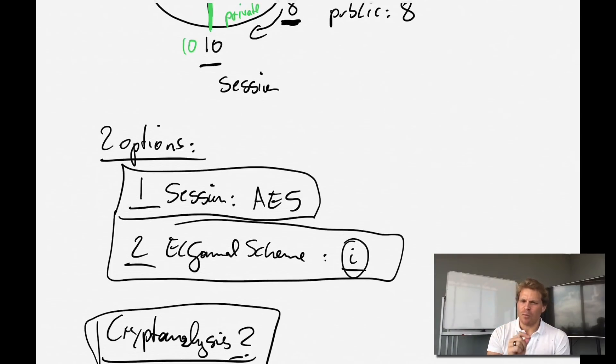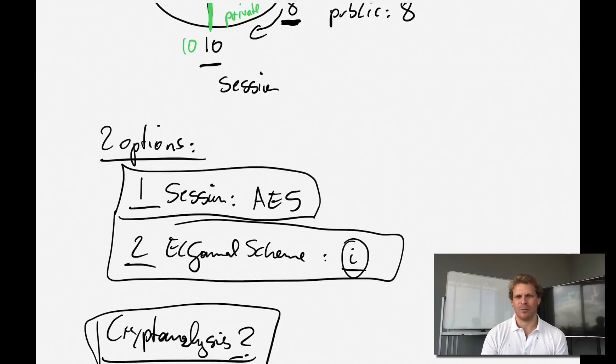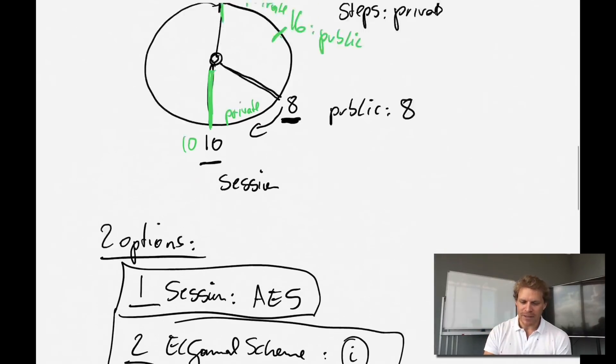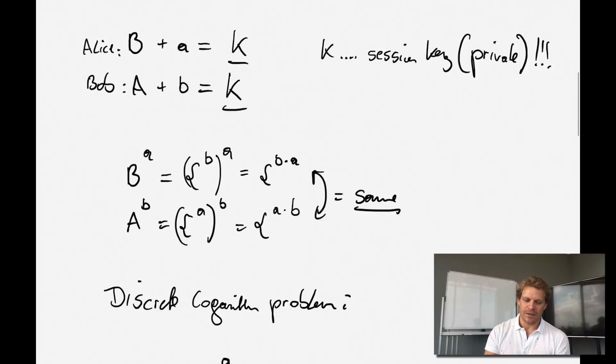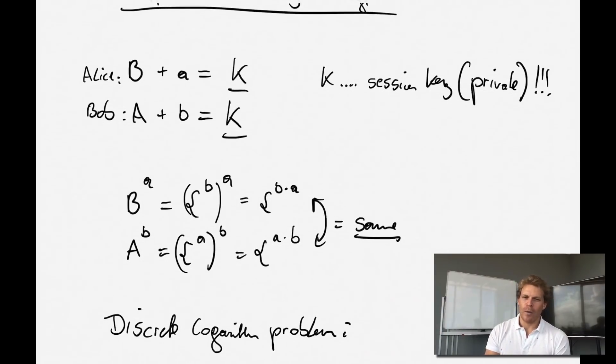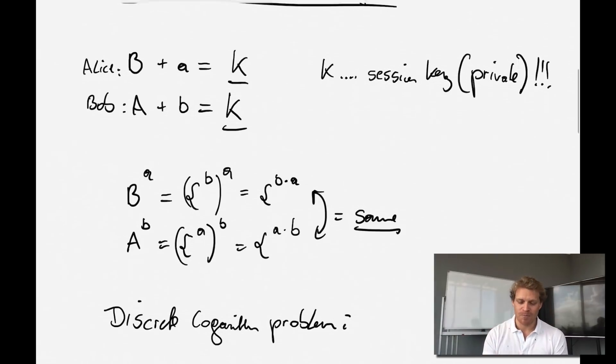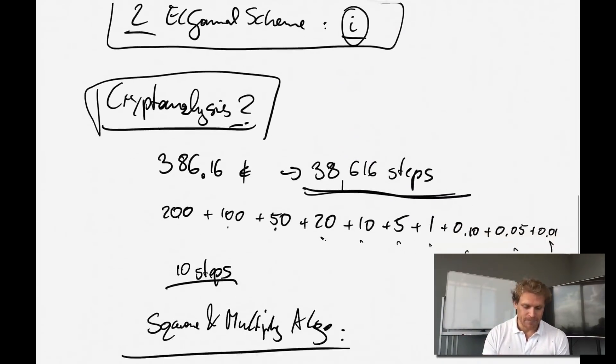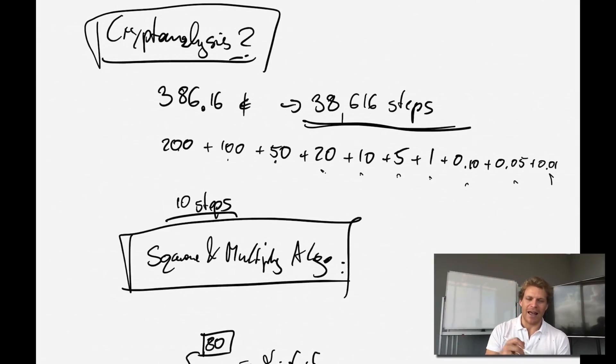When we move to the third major group of asymmetric cryptography — elliptic curve cryptography — the same principles apply. Instead of the discrete logarithm problem, we'll be talking about points on a curve with similar rules, just at a higher level of abstraction. The square-and-multiply algorithm will be key to understanding elliptic curves as well. Let me know what you think in the comments, give a thumbs up, subscribe, and I look forward to seeing you in the next episode on elliptic curves.